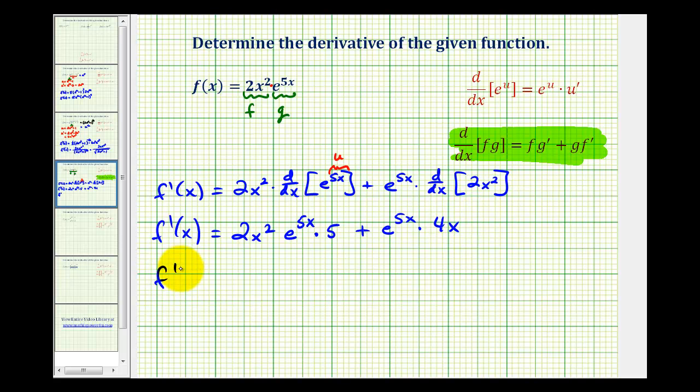So let's go ahead and determine these products. Here we'll have 10x squared e to the 5x, plus here we'll have 4x times e to the 5x.